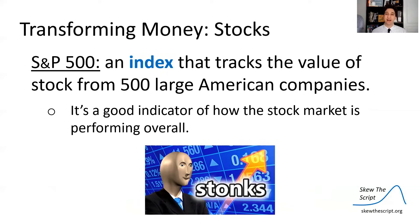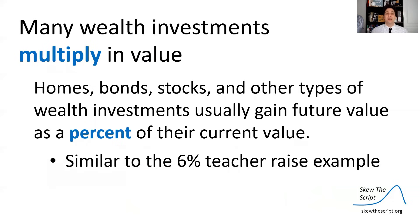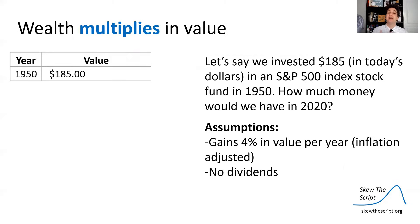The S&P 500 is a stock index that tracks stocks from the 500 biggest companies in the United States. It's a good indicator of how the stock market is doing overall. Many wealth investments multiply in value — homes, bonds, stocks — they usually gain annual value as a percent of current value, similar to the 6% teacher raise example. Say we invested $185 in today's inflation-adjusted dollars back in 1950. Assuming the fund gains about 4% value per year — multiplying by 1.04 each year, adjusting for inflation — by 1951 your stock would be worth $192.